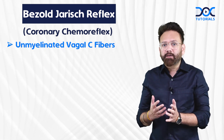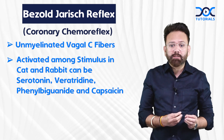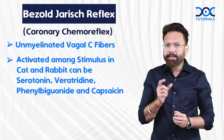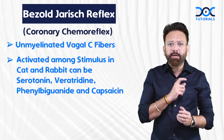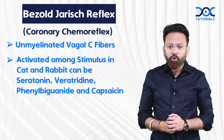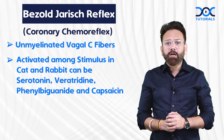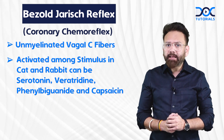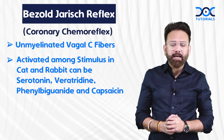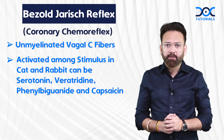How are they activated? What is the stimulus? The stimulus in the cat and the rabbit can be serotonin, veratridine, phenylbiguanides, and capsaicin.